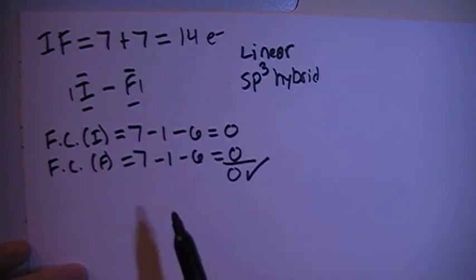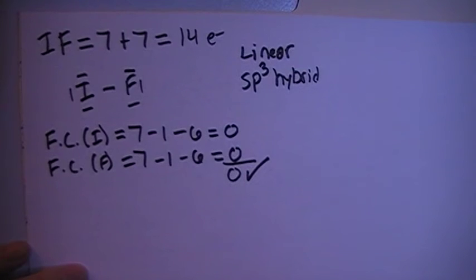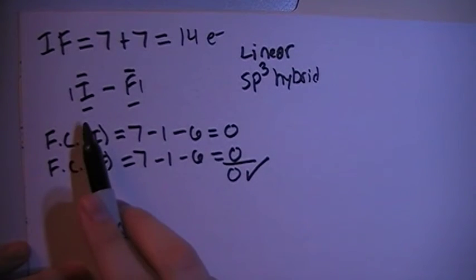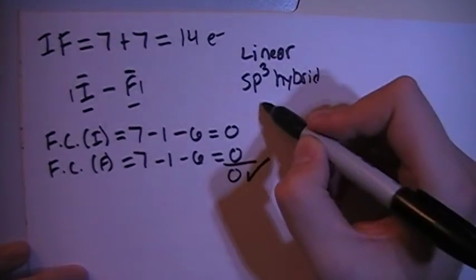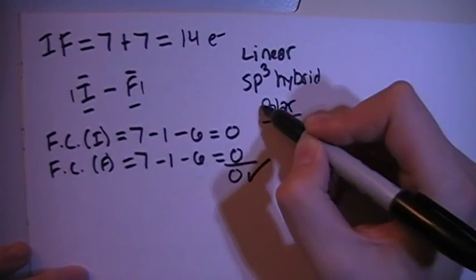In terms of polarity, because these 2 atoms are not the same kind of atom - one's an iodine and one's a fluorine - their polarities will not cancel out, which makes this a polar compound.